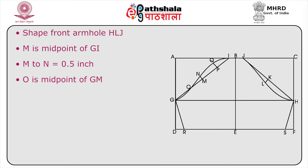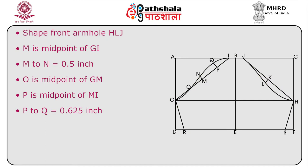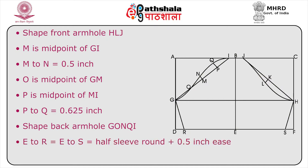O is the midpoint of G–M. P is the midpoint of M–I. P to Q equals 0.625 inches. Now shape the back armhole G–O–N–Q–I. E to R equals E to S, that is half sleeve round plus 0.5 inches for ease. Now join G–R and H–S.